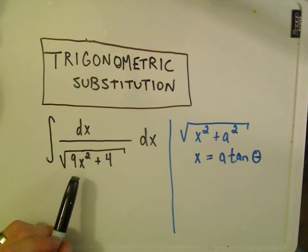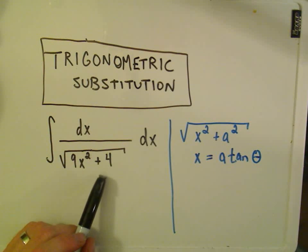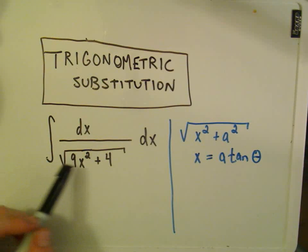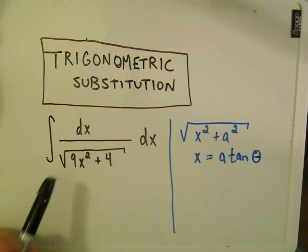In this one, we're going to integrate the square root of 9x squared plus 4. And again, you're going to do trigonometric substitutions when you see basically square roots, quadratic equations, quadratic expression under square roots is going to be a good time.